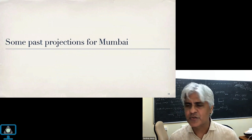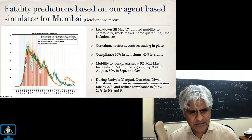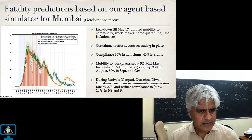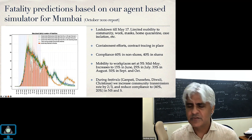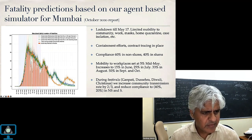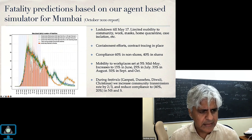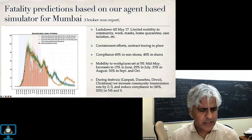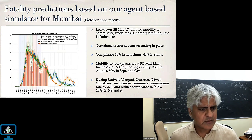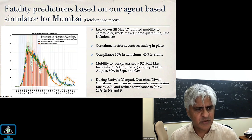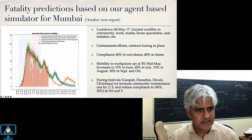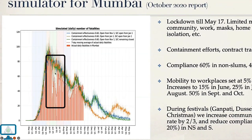Some past projections for Mumbai: the red bars are fatalities actually seen in Mumbai starting from March 1st, 2020, going on to mid-to-late October. We set our models to match the slope — that's how our transmission rates were calibrated. We said 60% of population in non-slums is compliant and 40% in slums is compliant; these numbers were chosen to match the observed fatalities. There are some gaps in the data which were never quite understood — some data issues with Mumbai.